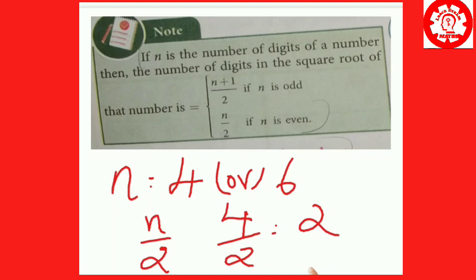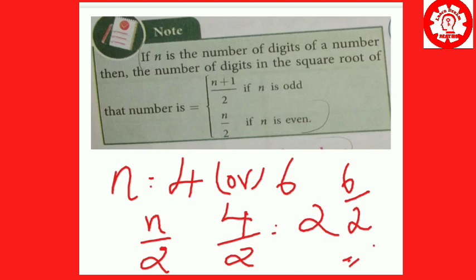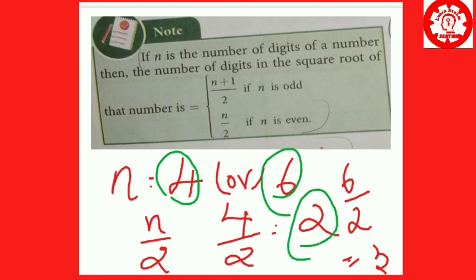If you have 6 digits, you get 3. So for even digit counts: 4 digits gives 2, and 6 digits gives 3. This is the formula for even numbers — divide the number of digits by 2 to get the digits in the square root.